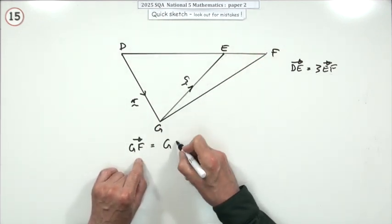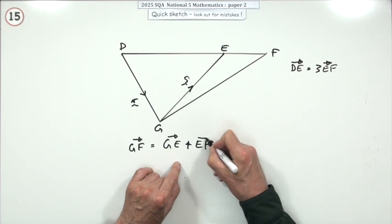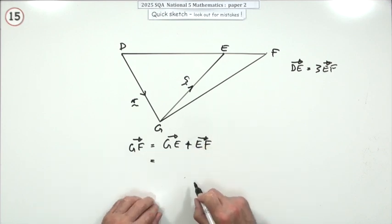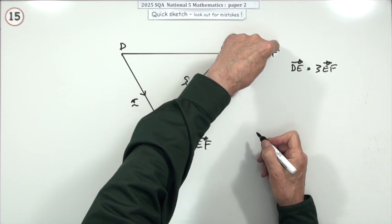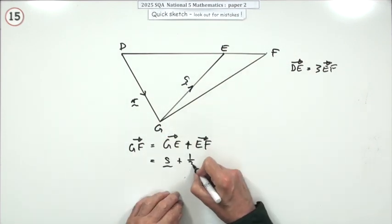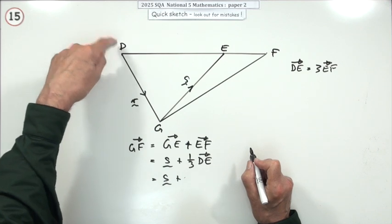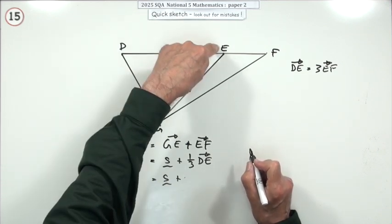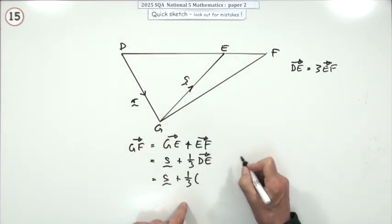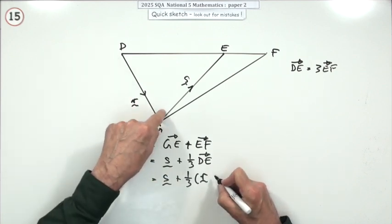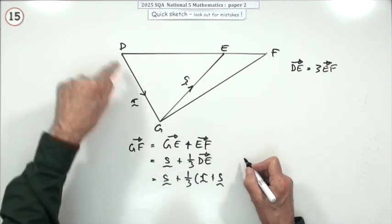So what I'm going to do is I'm going to go from G to E, and then I'm going to go from E to F. Well, going from G to E is just s. Going from E to F is a third of that. So it's plus a third of going from D to E. Now, what is going from D to E? Anything that starts from D and finishes at E is equivalent. So going from D to G and G to E is the same as DE. So it'll be a third of, going from D to G is r, and going from G to E is s. DE is just the sum of r plus s. You should recognize that pattern.